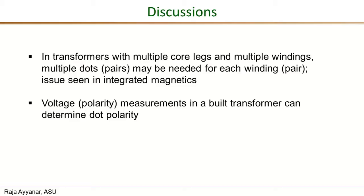The second point is that if you have a wound transformer where it is not possible to determine the winding directions of every coil, it is still easy to determine the dot polarity. All you have to do is apply a small AC voltage to any one of the windings and look at the voltage waveforms of all the other windings with respect to the applied voltage. By looking at the phase relationship, you can easily determine the dot polarity using the rules learned in this video.